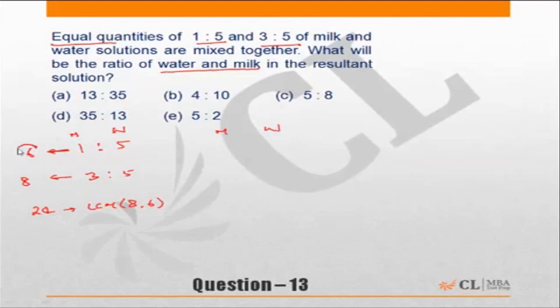24 means 6 times 4, so multiply both with 4. So this is 4:20. And this is 8, so we multiply with 3, so 9:15. So what is the ratio of milk to water if equal quantities are mixed? 9 plus 4 is 13, 13:35.